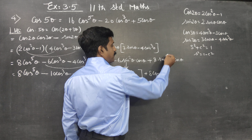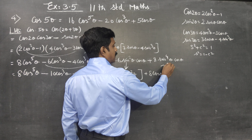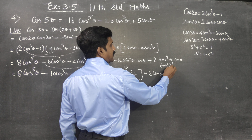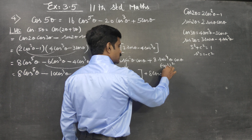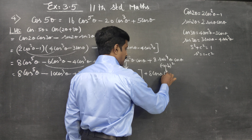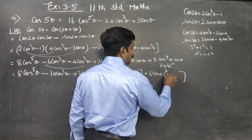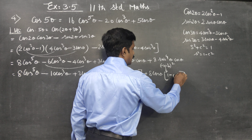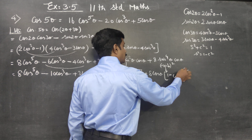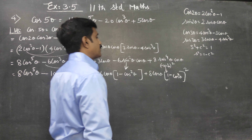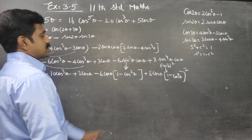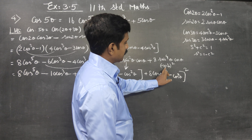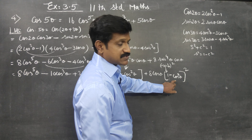For sin⁴θ, we write it as (sin²θ)². Substituting sin²θ = 1 - cos²θ, we get sin⁴θ = (1 - cos²θ)². So 8sin⁴θcosθ = 8(1 - cos²θ)²cosθ.